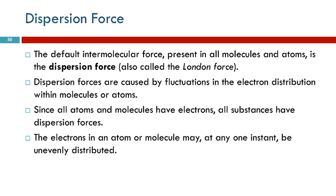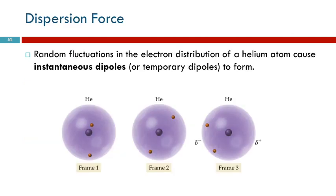We've talked a little bit about electrons and how they're arranged in atoms — they are able to fluctuate. They're moving essentially independently of each other, and so at any given time you could find more electrons on one side of the atom than on the other. Here's an illustration of a helium atom. It has two protons in its nucleus and two electrons, and sometimes those electrons end up on one side.